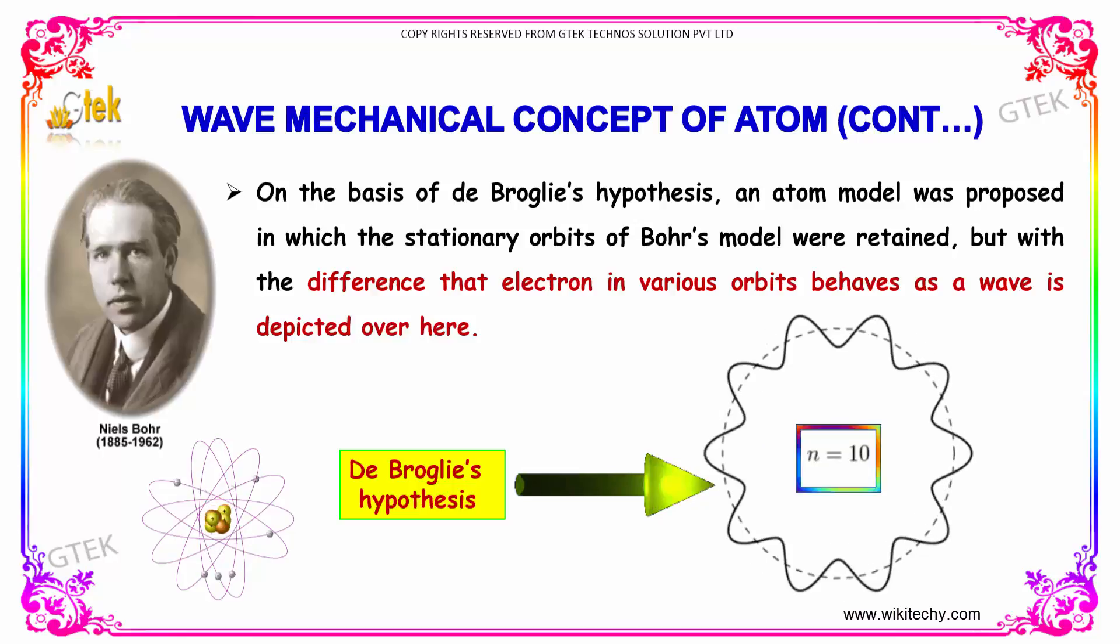This is referred to as de Broglie's hypothesis. You can see here, based on the value of n, automatically the different shape of the outer orbit is formed.